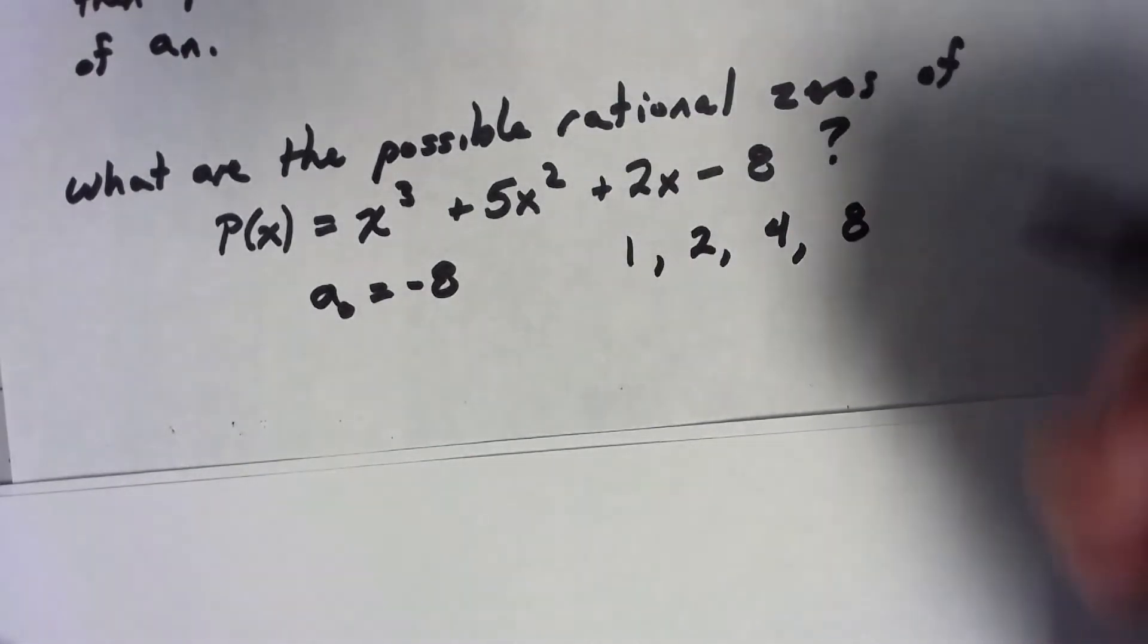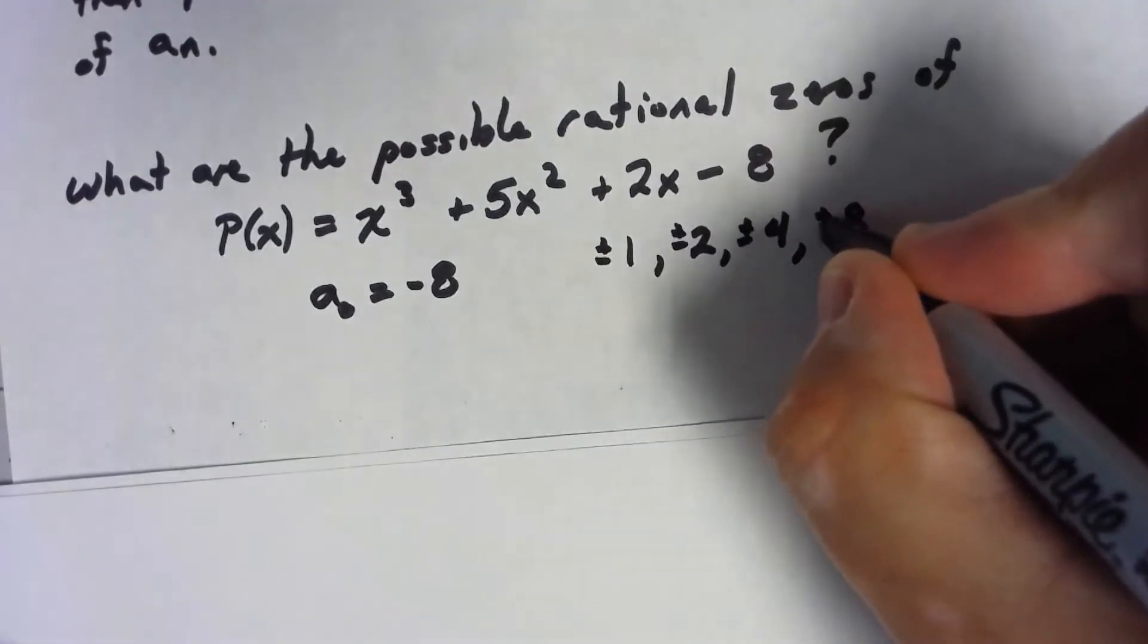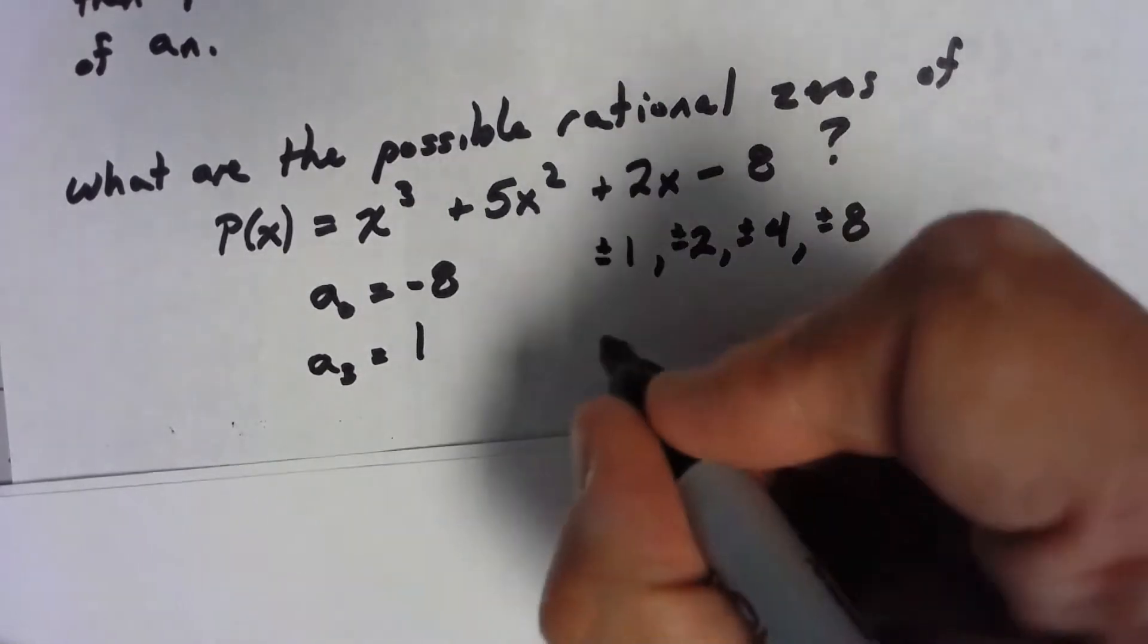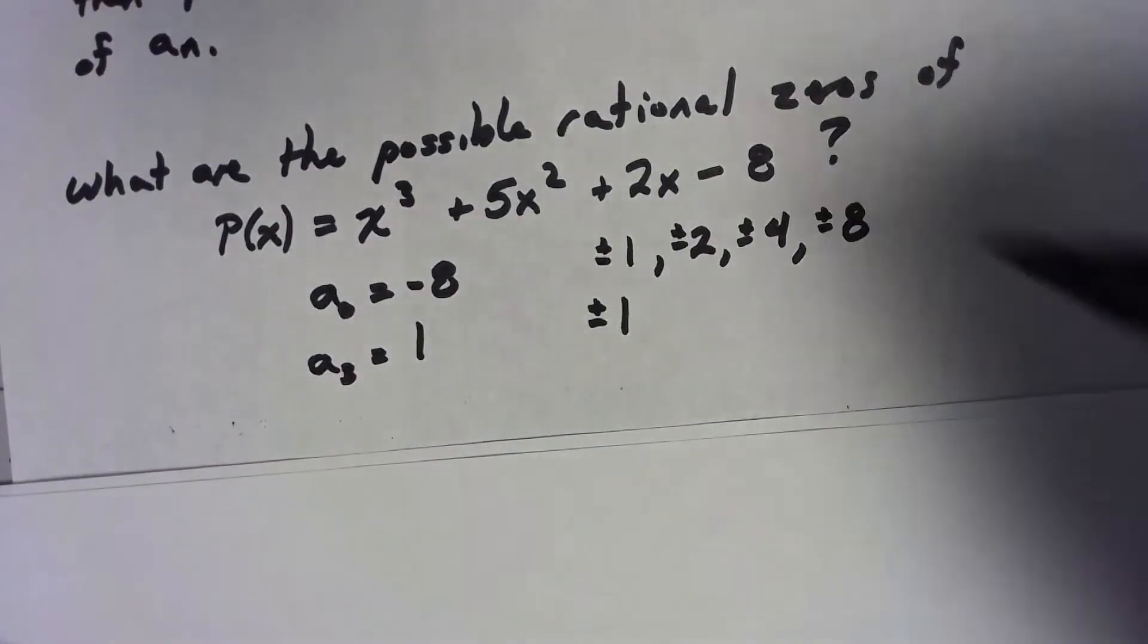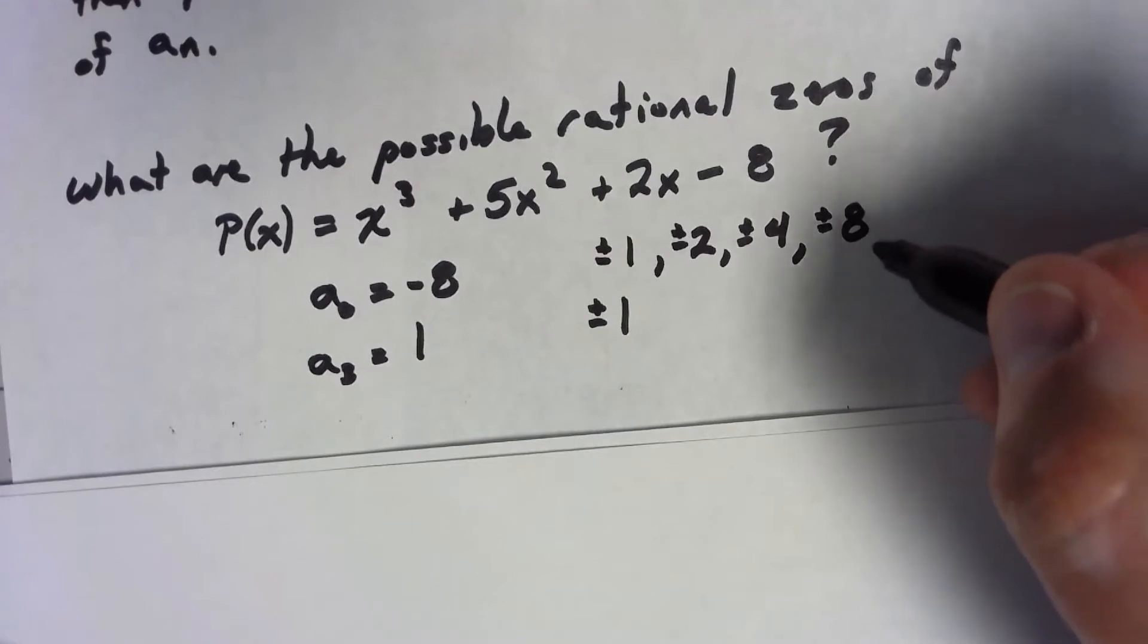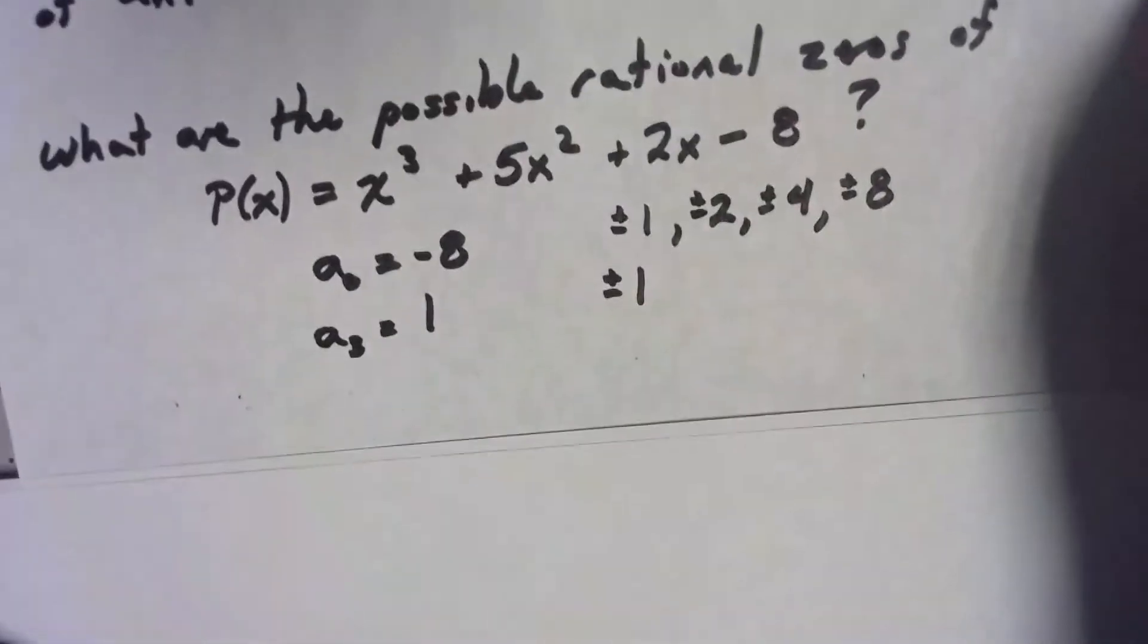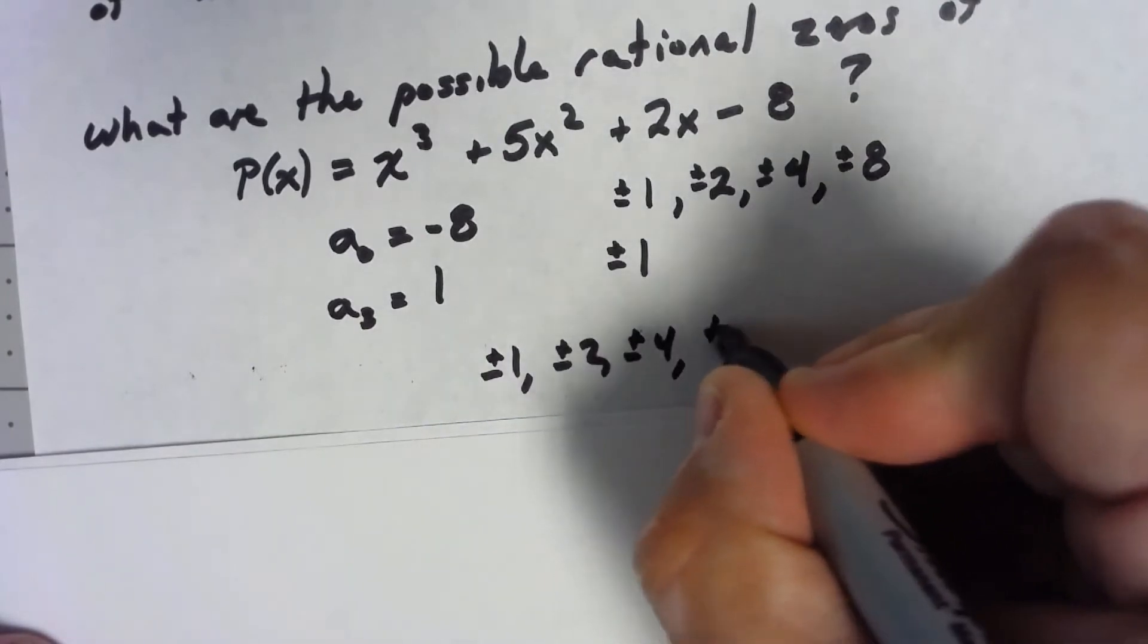Now always though because of the way negatives work we can always multiply things, either one of these things could be positive or negative. In this case my leading coefficient a sub 3 is just 1 and what are the factors of 1? Well just 1 but again it could be positive or negative. So anything that's a possible rational zero here is one of these numbers, a factor of the constant over a factor of that leading coefficient. Well dividing by positive or negative 1 that's not really going to change this list. So the possible rational zeros are plus or minus 1, plus or minus 2, plus or minus 4, and plus or minus 8.